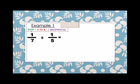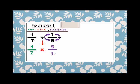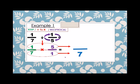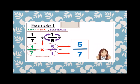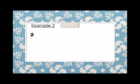By the rule: keep one over seven, then change from division to multiplication, and then the reciprocal of one-fifth is five over one. We multiply the denominator: seven times one is seven. And the numerator: one times five is five. Therefore, one over seven divided by one-fifth equals five over seven.